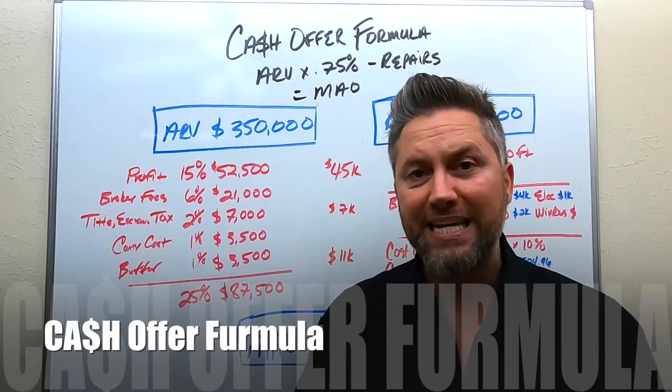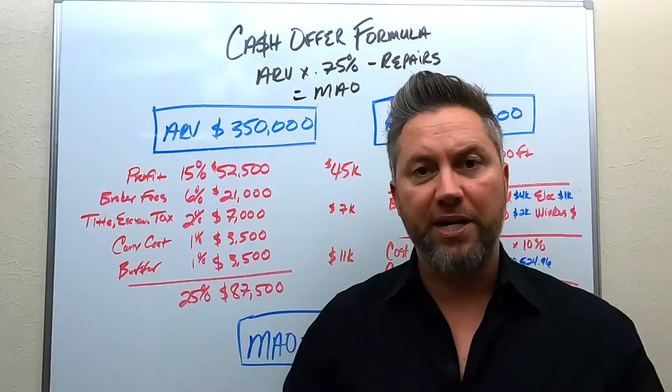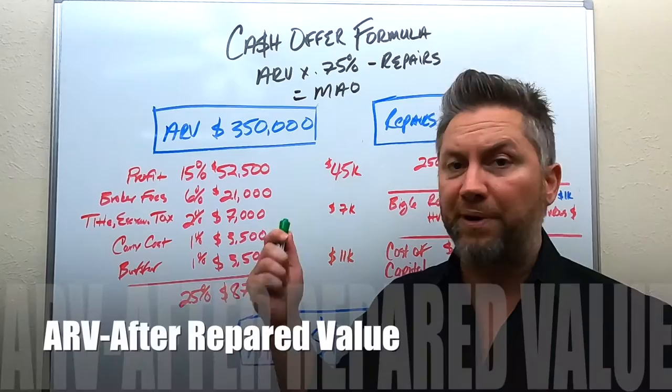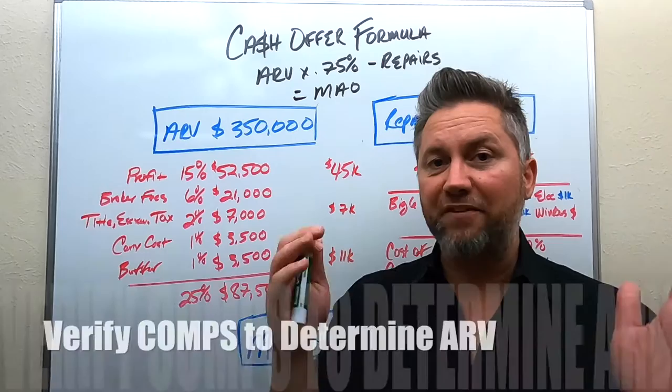This formula can vary depending on your experience level. You really need to know how all the numbers break down so you can calculate offers and not lose money. If you're advanced and have been doing this for quite some time, you'll be able to know these numbers and dial them in. In my market we make offers on properties where the ARV is around $350,000, so that's the example we're going to use — an after repair value of $350,000.